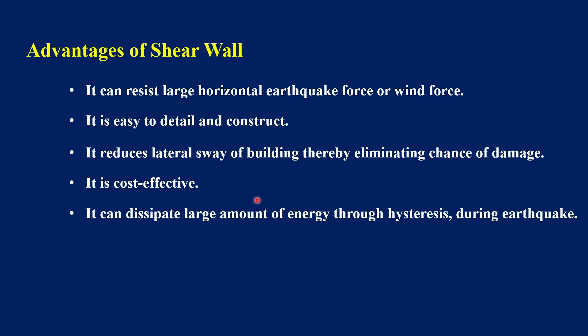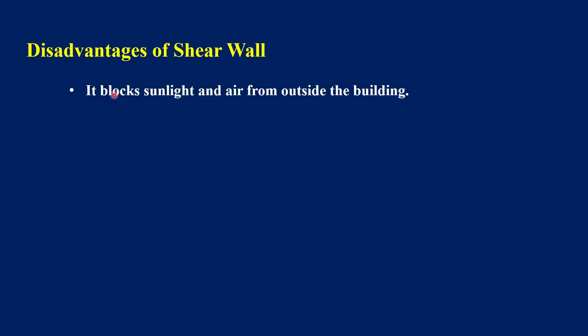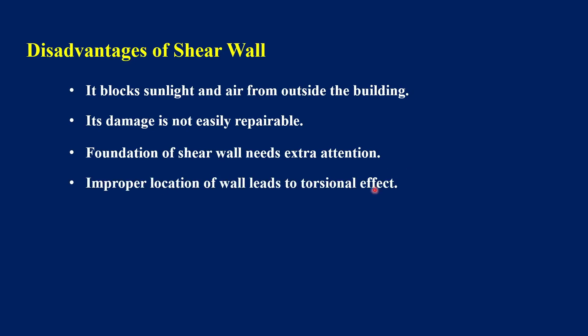There are also disadvantages. Shear walls block sunlight and air from outside since the wall has no opacity and openings are generally avoided. Damage to a shear wall is not easily repairable — in most cases it may not be repairable at all. The foundation of a shear wall needs extra attention because the rigidity attracts large forces and overturning moments requiring a strong foundation. Improper location leads to torsional effects, so walls must be disposed symmetrically in both directions of the building.